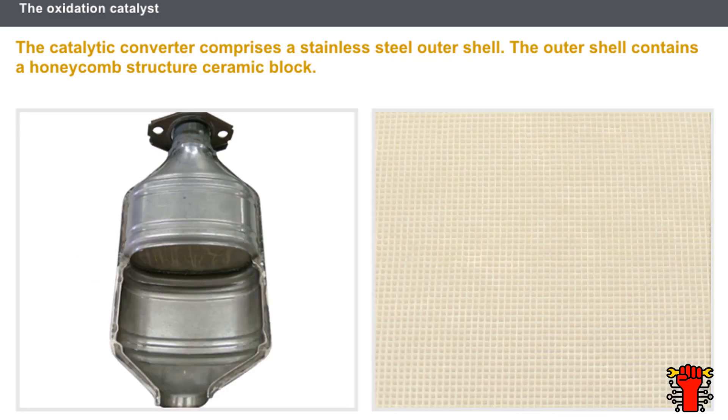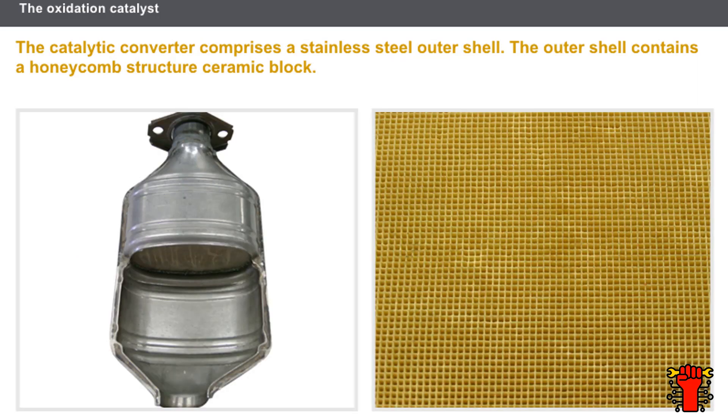The catalytic converter comprises a stainless steel outer shell. The outer shell contains a honeycomb structure ceramic block. The honeycomb structure makes it possible to increase the contact surface between the exhaust gases and the precious metals.